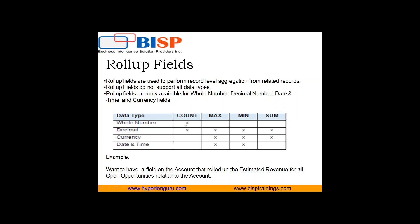Whole Number only supports Count. Decimal supports Count, Maximum, Minimum, and Sum. Currency supports only Maximum, Minimum, and Sum — you cannot count currency, but you can find the maximum, minimum, or sum. Date and Time supports only Maximum and Minimum, because you cannot aggregate or count date and time values. This table summarizes the supported data types and aggregation functions for roll-up fields.